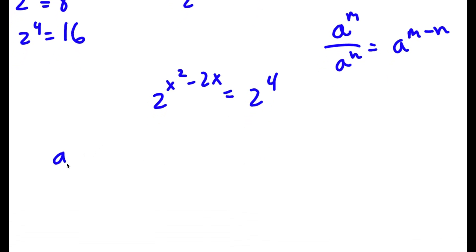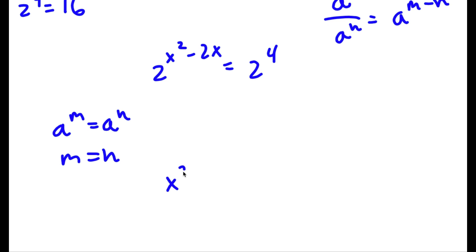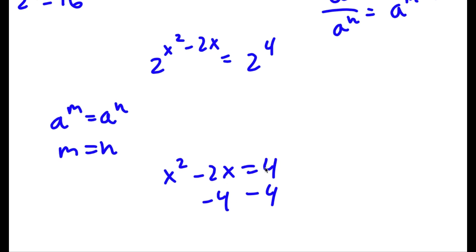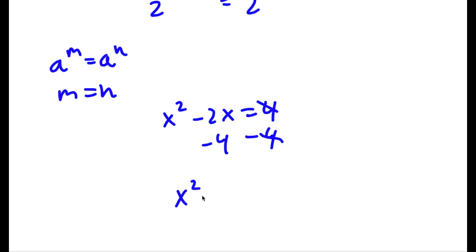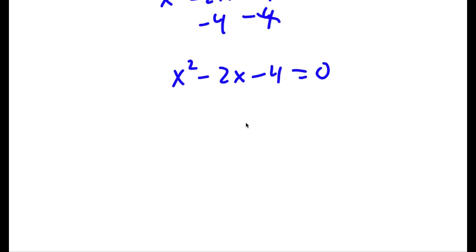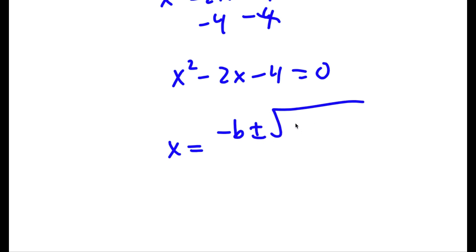Now, if I have something in the form a to the power of m is equal to a to the power of n, this means that m is equal to n. So in this case, x squared minus 2x is equal to 4. So now I can subtract 4 on both sides, and I get x squared minus 2x minus 4 is equal to 0.